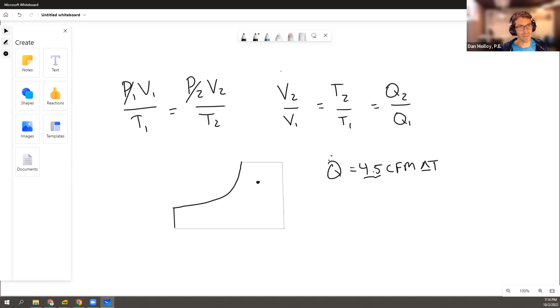And the assumption that's baked into this 4.5 constant, and it's the same for 1.08 CFM delta T if you're doing sensible only, is that the density is 0.075 pounds per cubic foot.